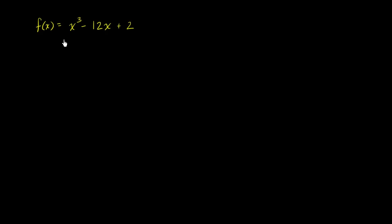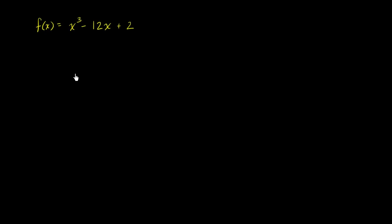We've got the function f of x is equal to x to the third power minus 12x plus 2. What I want to do in this video is think about at what points does my function f take on minimum or maximum values. To figure that out, I have to first figure out what are the critical points for my function f, and then which of those critical points do we achieve a minimum or maximum value.